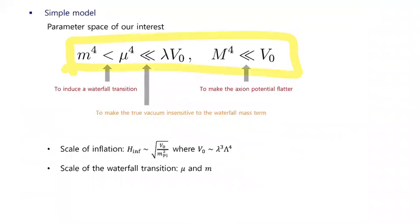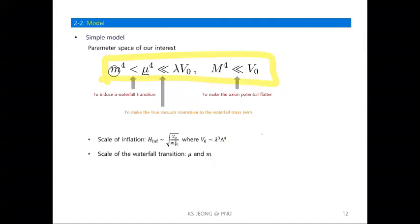This shows the parameter space of our interest. We will consider small m compared to μ — this is required to induce the waterfall transition. The effective waterfall mass parameter squared is positive during inflation but becomes negative at some point depending on the inflaton evolution. So we need this condition for the waterfall transition.